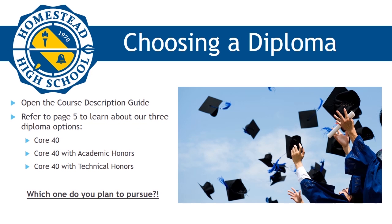Before moving forward with your 4-year plan, you need to understand your different diploma options. Please refer to page 5 of the course description guide to view the different diploma types and course requirements. If you want to pursue a technical honors diploma because you plan to enter a technical career such as engineering or biomed, please note that colleges prefer to see the academic honors diploma. It is also important to know that you can earn both the technical and academic honors diploma. Please refer to this page and the diploma requirements while you map out your 4-year plan.